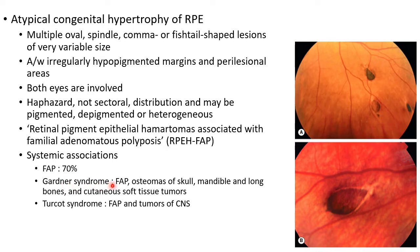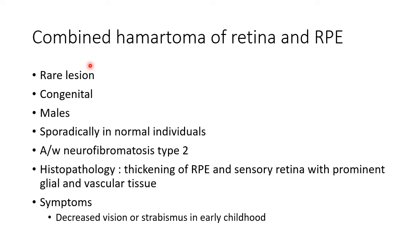Atypical CHRPE can also be seen in Gardner's syndrome, in which there will be familial adenomatous polyposis, osteomas of skull, mandible and long bones, and continuous soft tissue tumors. They are also associated with Turcot's syndrome, in which there will be FAP and tumors of the CNS.